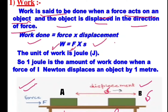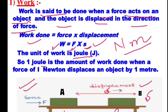The unit of force is Newton and the unit of displacement is meter. So the units become Newton meter, or in SI units we take the unit of work as joule. So 1 joule is the amount of work done when a force of 1 Newton displaces an object by 1 meter.